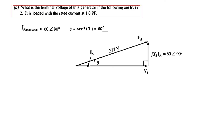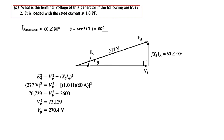Part B2: Power factor = 1, so theta = cos⁻¹(1) = 0°. Current is 60∠0°. The phasor diagram shows Xs·Ia is directly at 90° to V-phase. Applying Pythagoras: EA² = V-phase² + (Xs·Ia)². Plugging in values gives V-phase = 270.4 V, and terminal voltage = 468.4 V.